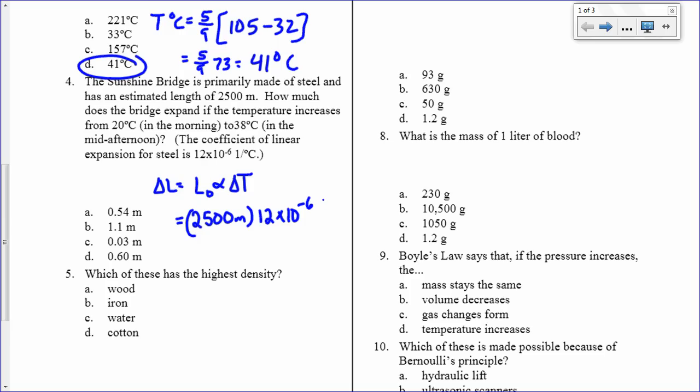Alpha is 12 times 10 to the minus 6. That's in 1 over degrees Celsius. And then my change in temperature is going to be 38 minus 20. That's 18 degrees Celsius. It changes by 18 degrees Celsius. And I get 0.54 meters. That's 54 centimeters. That's a half a meter. That's pretty big.